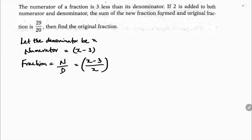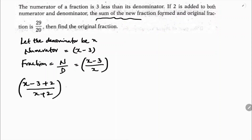If 2 is added to both numerator and denominator, the given condition is: the sum of the new fraction and the original fraction — original fraction is x minus 3 by x — equals 29 by 20. The new fraction has 2 added to numerator and denominator, and if you add these two, the sum is 29 by 20.